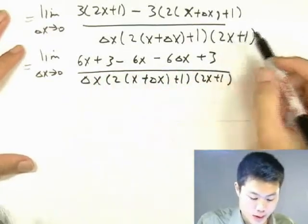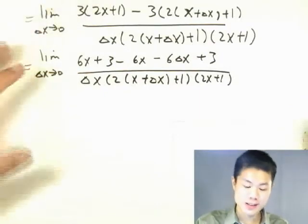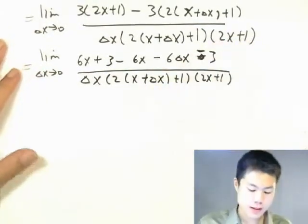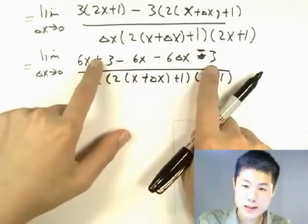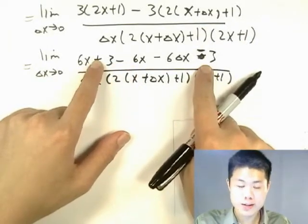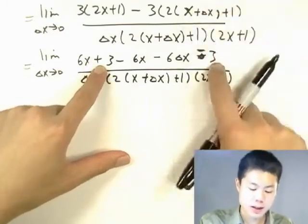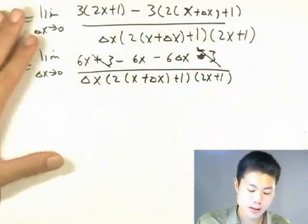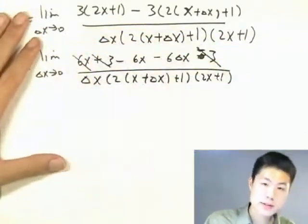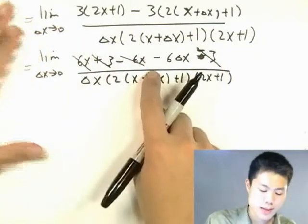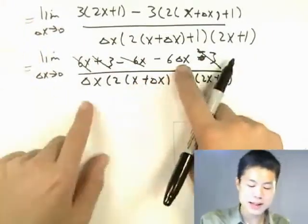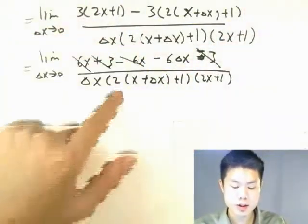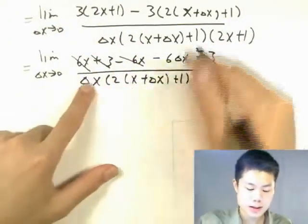So we need to distribute. It becomes 6x plus 3 minus, remember to distribute this negative sign here or you'll make a mistake, minus 6x minus 6 delta x plus 3, all over the thing again. This should be a negative sign here. How did I know? Well, I was looking at plus 3 and plus 3 again. No, it has to be plus 3 and negative 3. So plus 3 and negative 3 cancel out. Positive 6x and negative 6x cancel out.